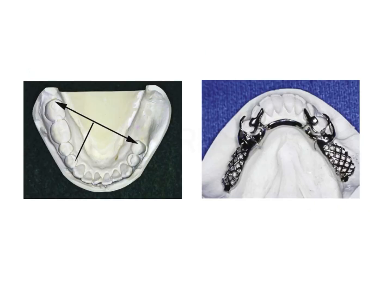By connecting these direct retainer assemblies on both sides and drawing a fulcrum line. A fulcrum line is that axis along which the denture is going to tip. Perpendicular to that, you will give an additional component called an indirect retainer. It should be placed perpendicular to the fulcrum line, as far anteriorly as possible, and it can be in the form of a cingulum rest, an occlusal rest, or a combination of both.